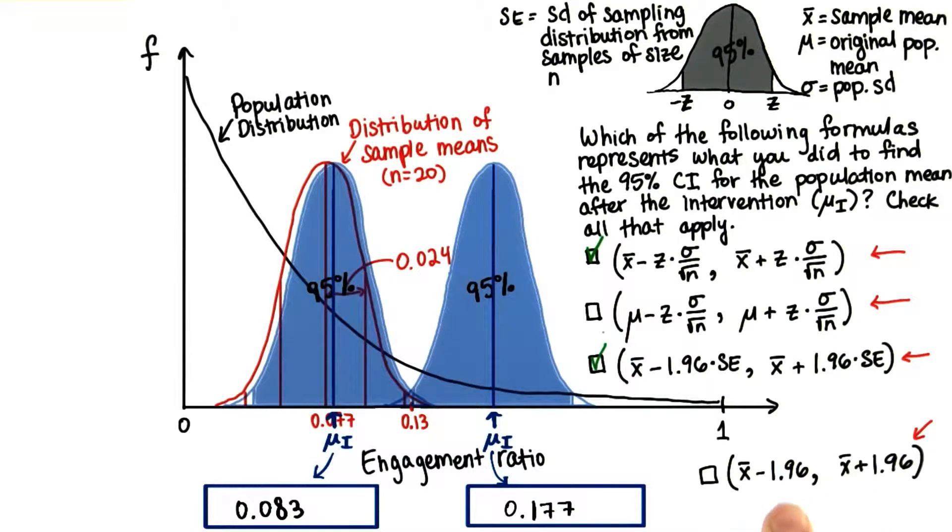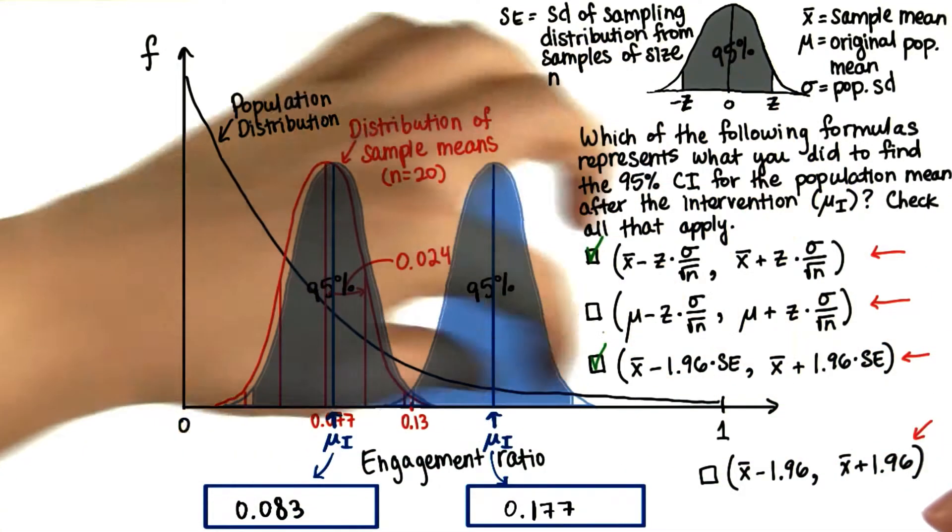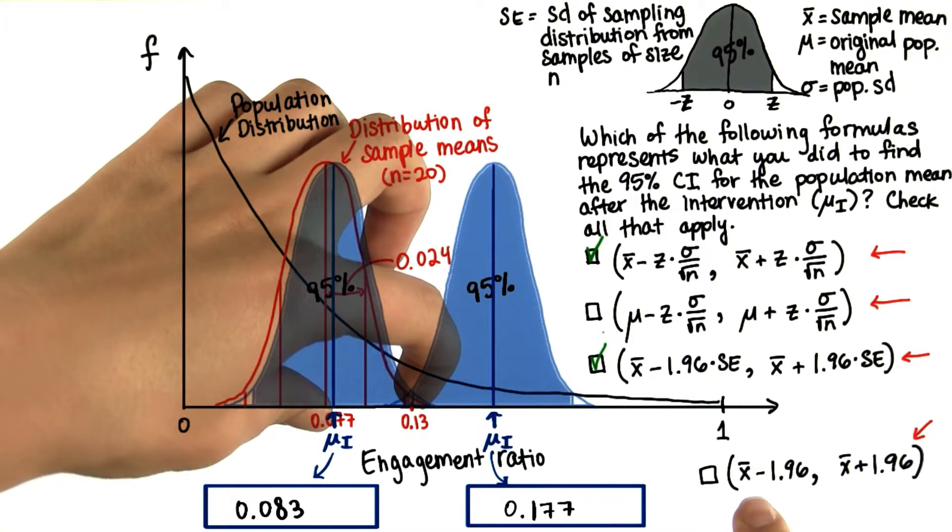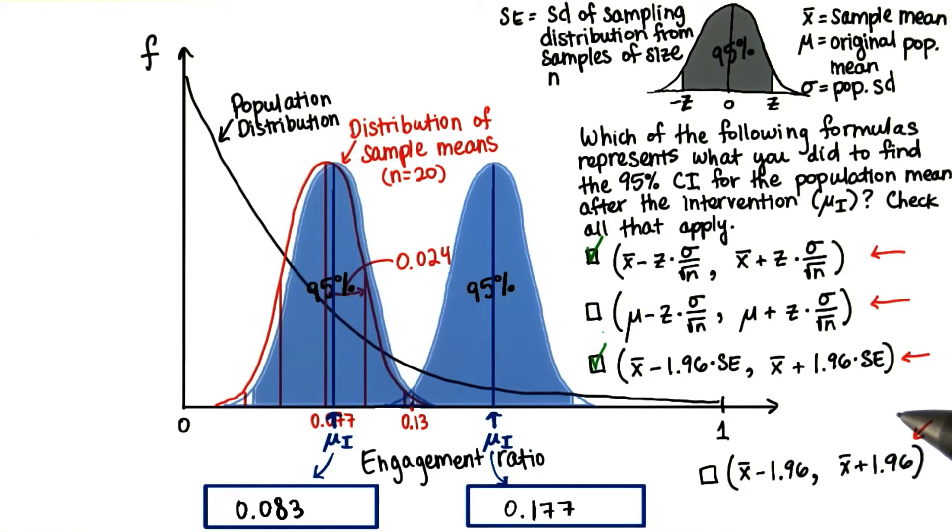And this one doesn't really make sense because we can't just subtract the number of standard deviations. We need to multiply this number of standard deviations by what the standard deviation actually is to find the distance away from the sample mean we need to go. Hopefully that makes sense.